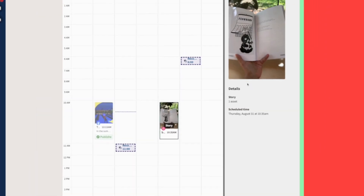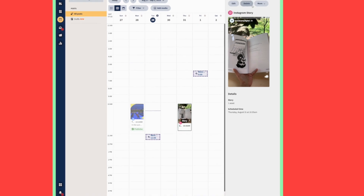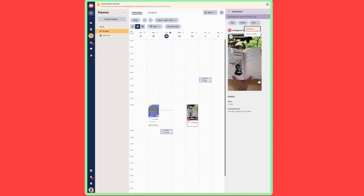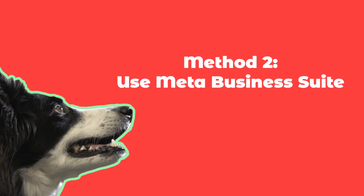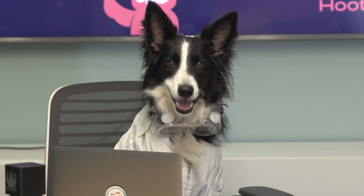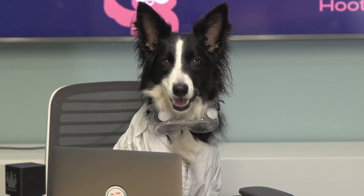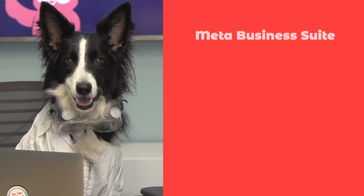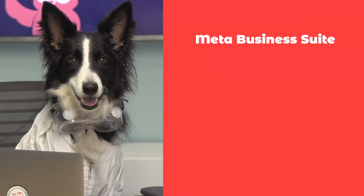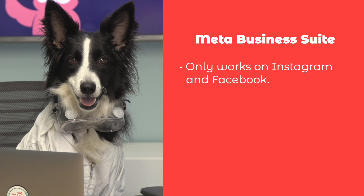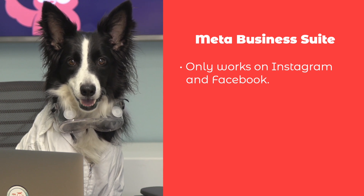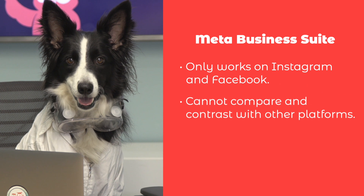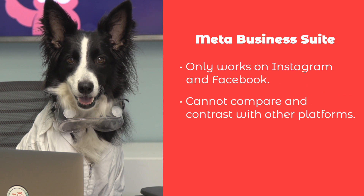Your story will now show up alongside all of your other content in Hootsuite's calendar. You can also post Instagram Stories from your desktop, PC, or Mac by using Meta Business Suite. However, it only works on Instagram and Facebook, so while you'll be able to see your scheduled content for those platforms, you aren't able to compare and contrast them to your full social calendar.